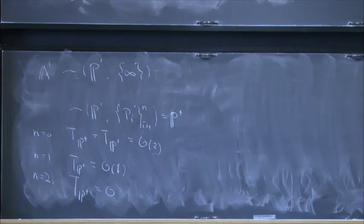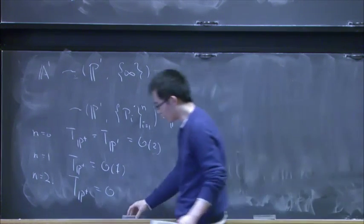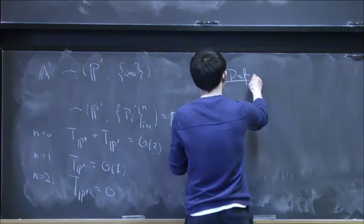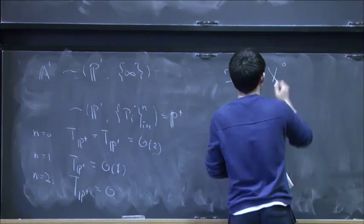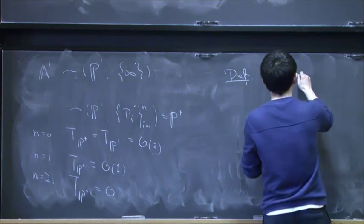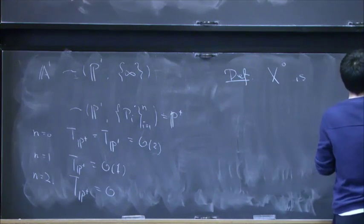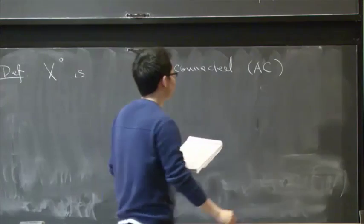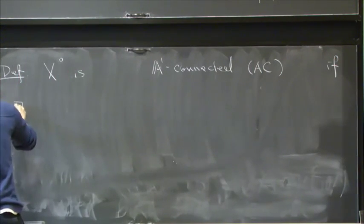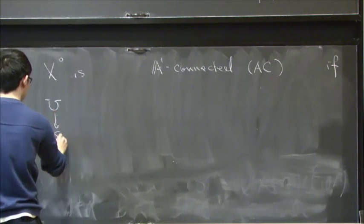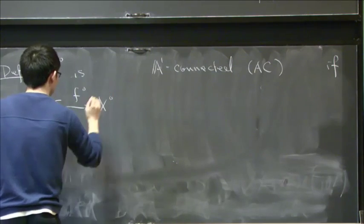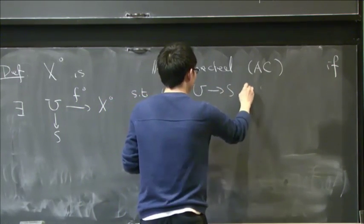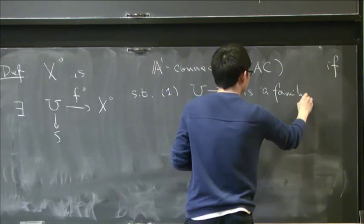So now I want to mimic the case of rationally connectedness and to define the A1 connectedness. So here is the definition. So the quasi-smooth, quasi-projective variety X0 is A1 connected, I'll call it AC, if there exists a family like this, such that U over S, this is the family of A1s.